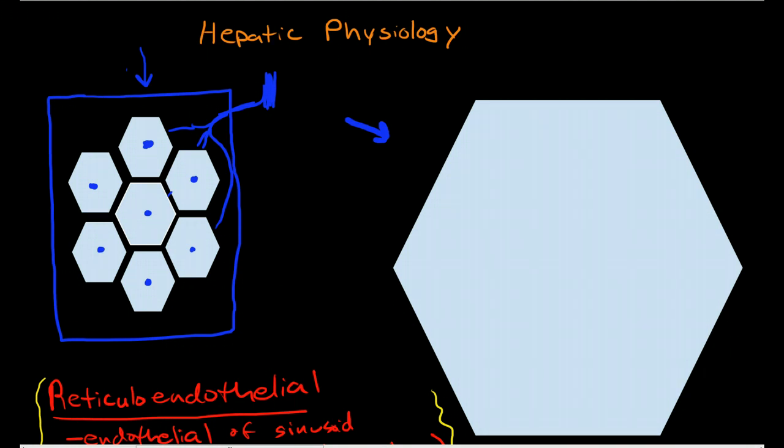The portal vein, the portal veins run here, actually let me draw them in a different color. So the portal veins are here, on the corners of each of these lobules, and then we have sinusoids that join them.